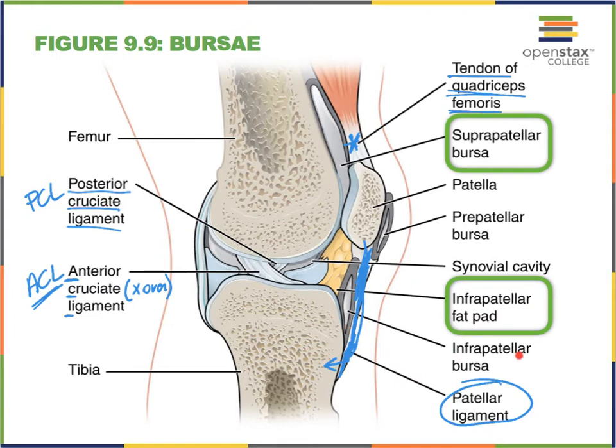This one is called the infrapatellar bursa—I don't need you to know the specific names, but there are plenty of bursae labeled here. These are all filled with synovial fluid, and notice where many of them sit: between something softer, such as a ligament, and something hard, such as our bone.